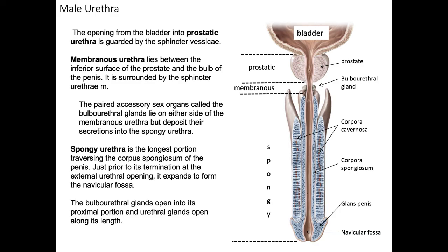Now we take a look at the male urethra, which is longer and more complex than the female urethra. After the bladder fills with urine, it is expelled and travels through the urethra. The prostatic portion is within the prostate. Then the membranous urethra is in the pelvic floor, going from the inferior prostate to the bulb of the penis, surrounded by the sphincter urethrae muscle. The spongy urethra is the portion inside the corpus spongiosum. The prostate forms some of the seminal fluid and facilitates ejaculation, while the bulbourethral glands produce lubrication fluid and prime the urethra for seminal fluid during ejaculation.